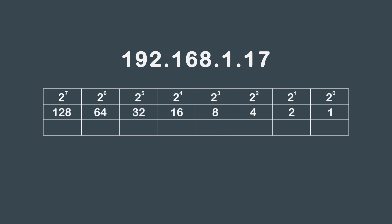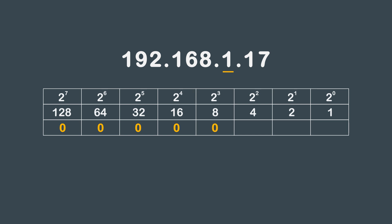We move to the third octet with the DDN of 1. You cannot remove 128, 64, 32, 16, 8, 4, or 2, so we place a 0 in all those blocks. However, the 1 can be removed from 1, so we place a 1 in the first block.